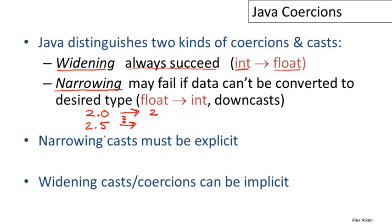A perhaps better example of the kind of narrowing cast that Java will complain about is something like a downcast. So if I have two classes, A and B, and B is a subtype of A, and then I have something of type A, well I can cast it to a B. Let's say I have X, which is of type A.